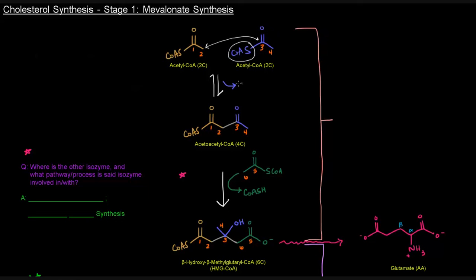So we're going to kick that coenzyme A off, CoASH, and we're going to get this acetoacetyl-CoA, which is just a four-carbon acyl-CoA.